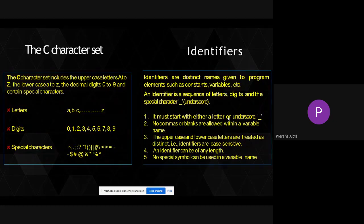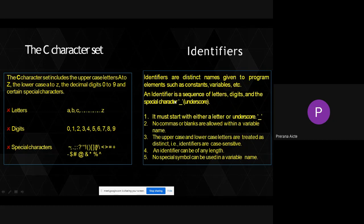The next token is character set. The C character set includes uppercase letters A to Z, lowercase letters a to z, decimal digits 0 to 9, and certain special characters. These are all atomic units. By using these atomic units, we build the program — that's why we first see the C tokens, then move on to the structure of a C program.